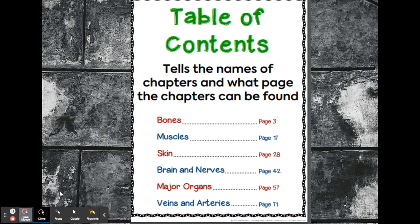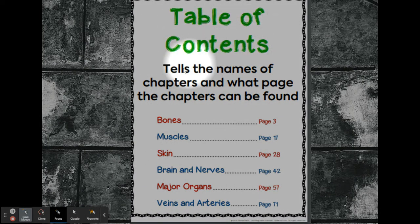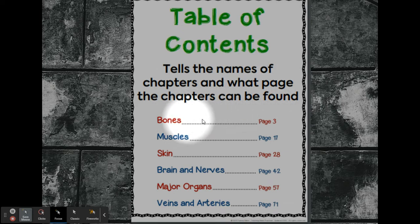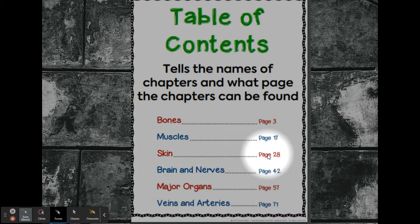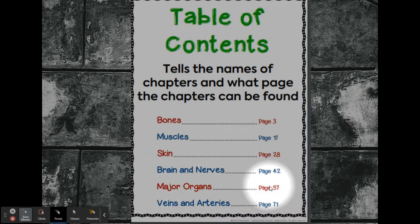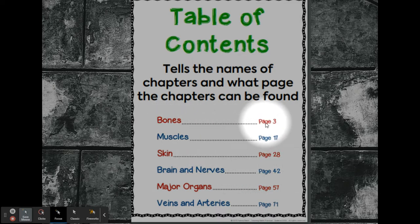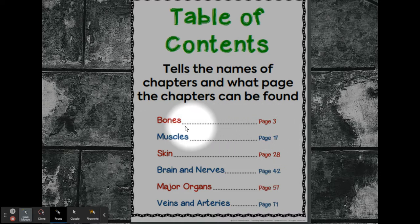Table of contents. This tells the names of chapters and what page the chapters can be found. Now it's not always going to be chapters — sometimes it might just be sections or topics in the book. So bones can be found on page three, muscles on page 17, skin on page 28, brain and nerves on page 42, major organs on page 57. Bones would be pages three through 16.